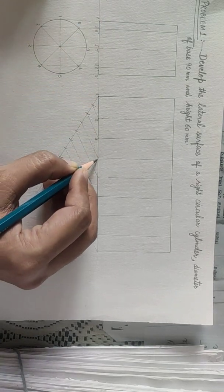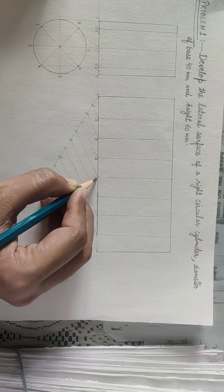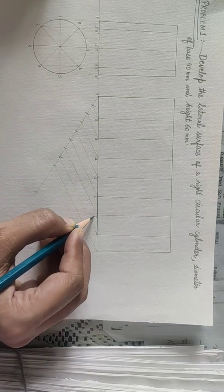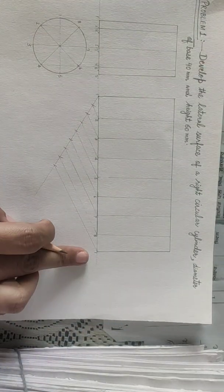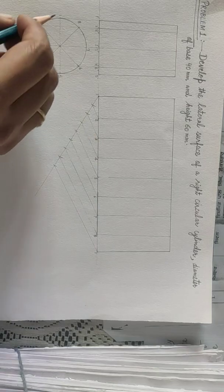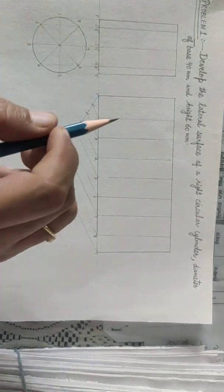1, 2, 3, 4, 5, 6, 7, 8 and 1. Because we have opened up the surface, so last point will be 1. And if you want to label the top part, it will be A dash,